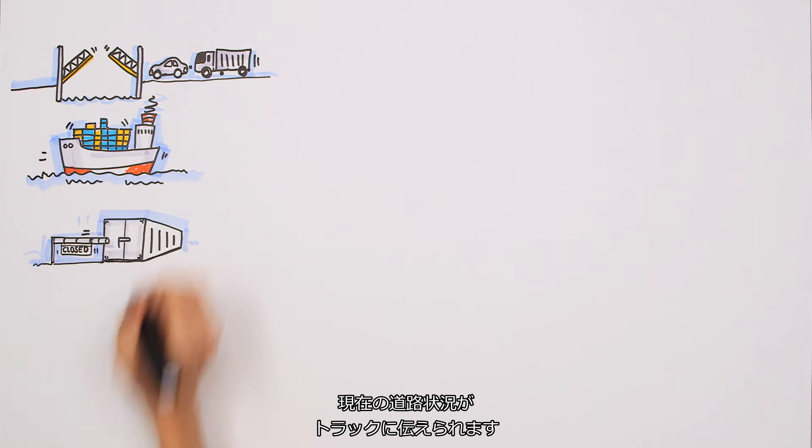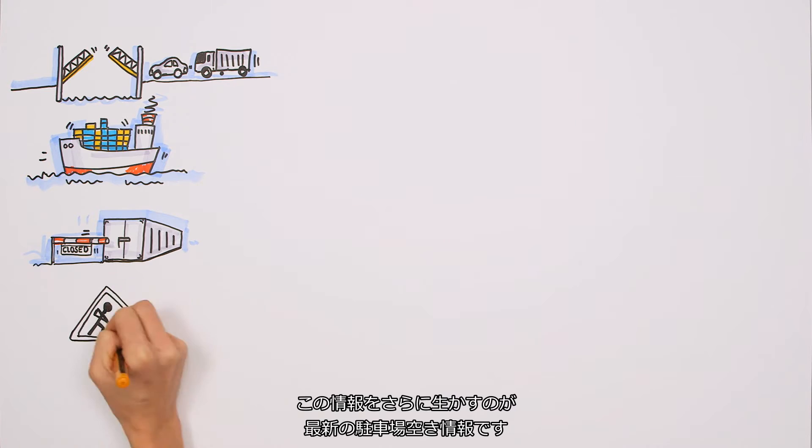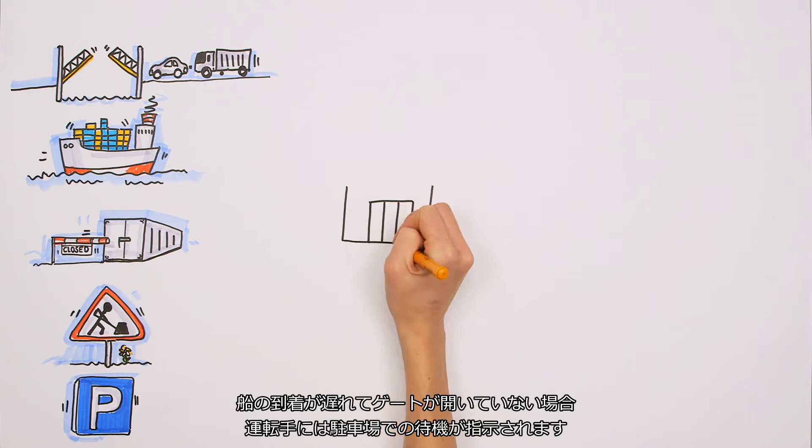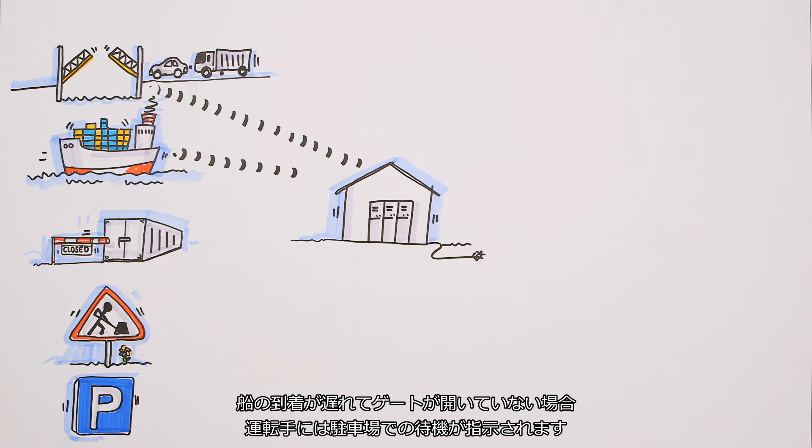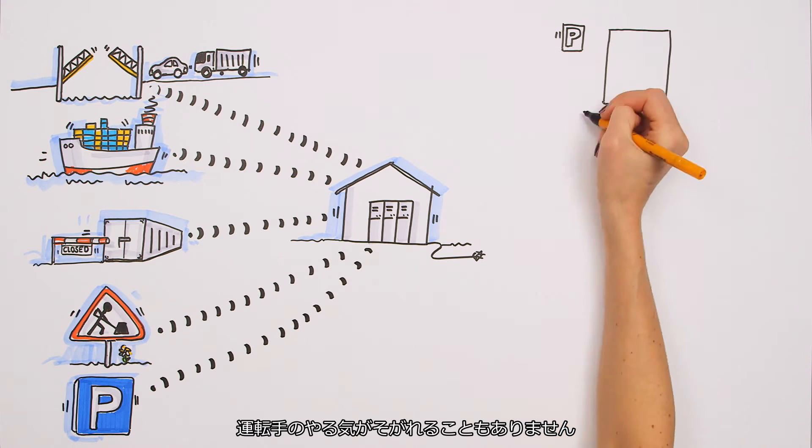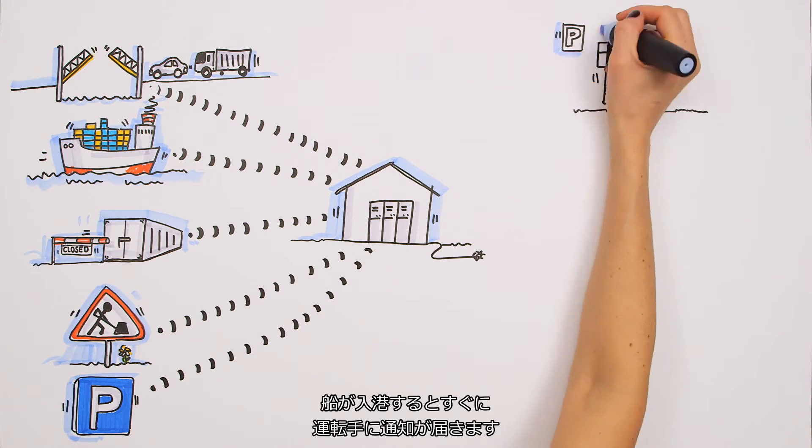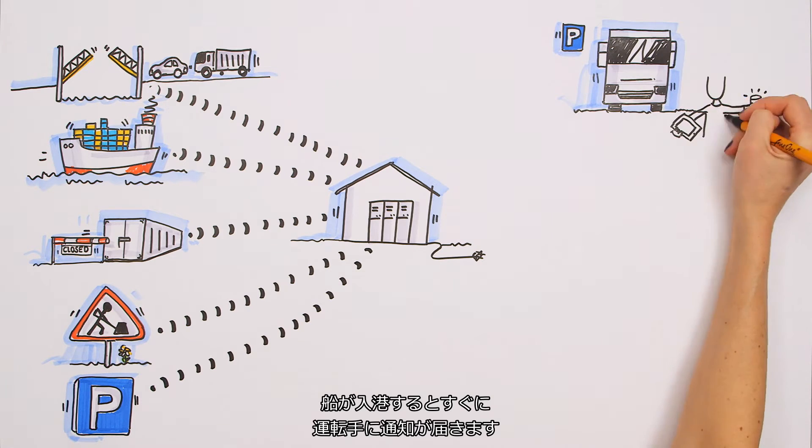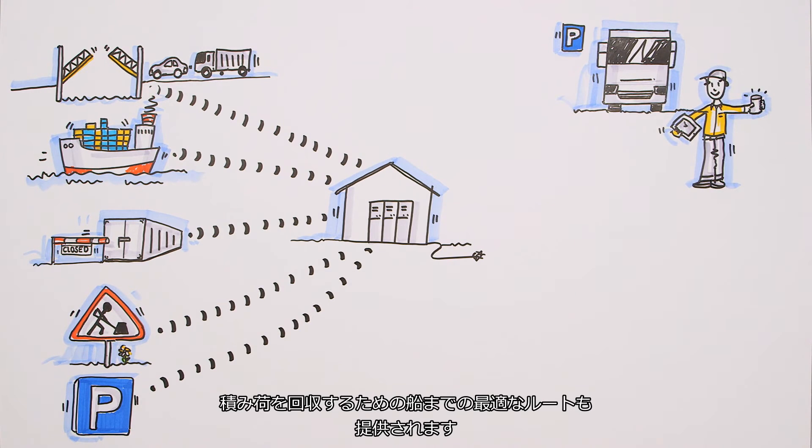Current street conditions are communicated to trucks. This is rounded off by up-to-date parking space information. If a ship is delayed and the container gate is not open, the driver is informed to wait at a parking area and might be incentivized. As soon as the ship arrives, the container gate notifies the driver, who is then given the optimal route to pick up shipment.